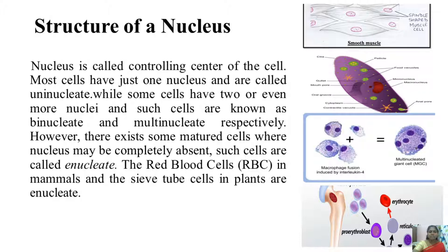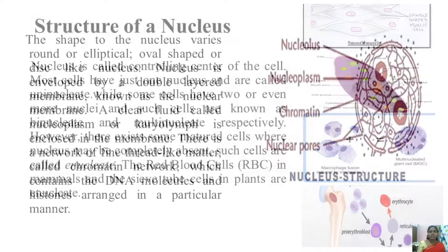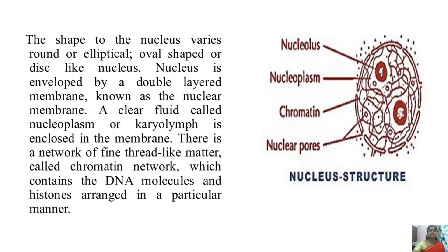The red blood cells in mammals and the sieve tube cells in plants are enucleate. The macrophages are multinucleate. The shape of the nucleus varies from round to elliptical, oval shaped, or disc-like. The nucleus is enveloped by a double-layer membrane known as the nuclear membrane.